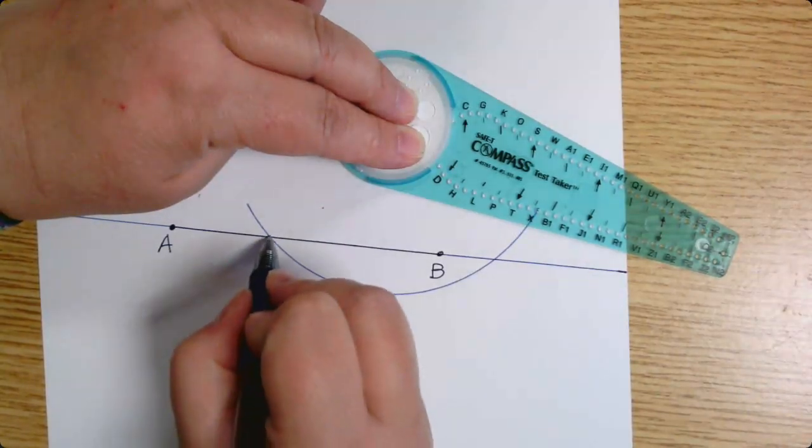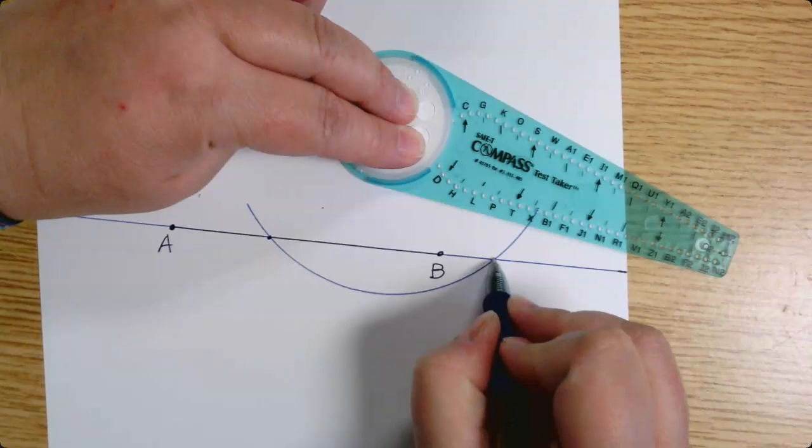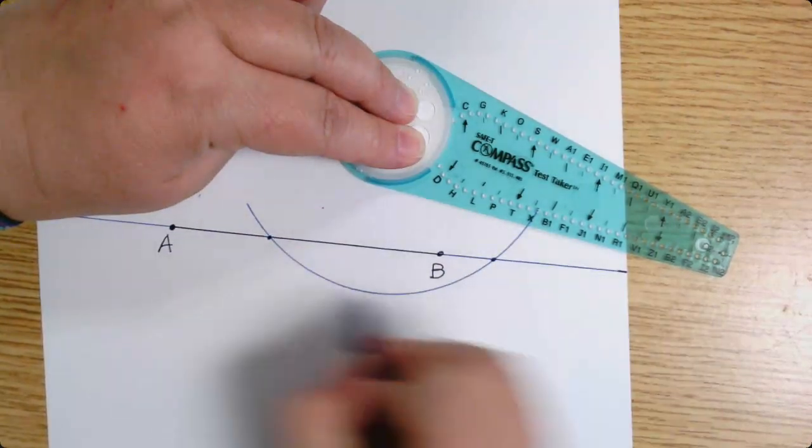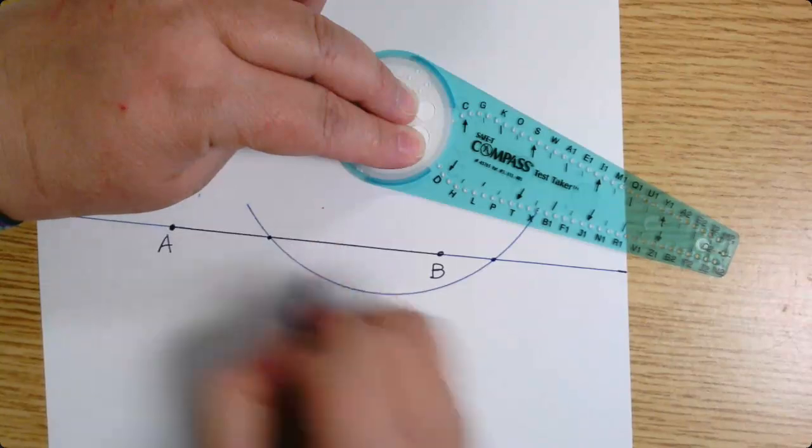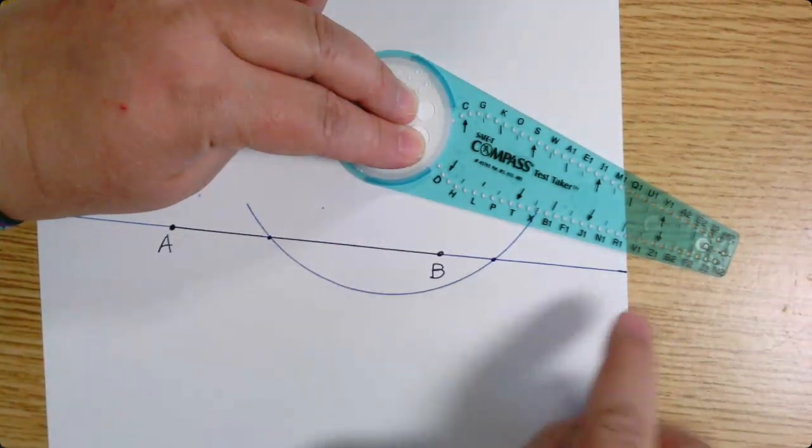Okay, so I'm going to make a point at both of those places where my big arc intersects the line I want to be perpendicular to twice.